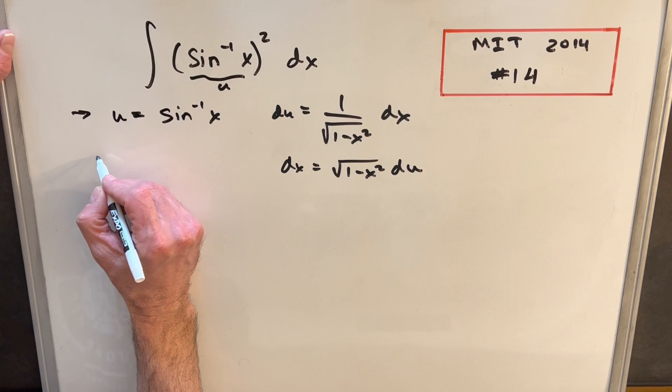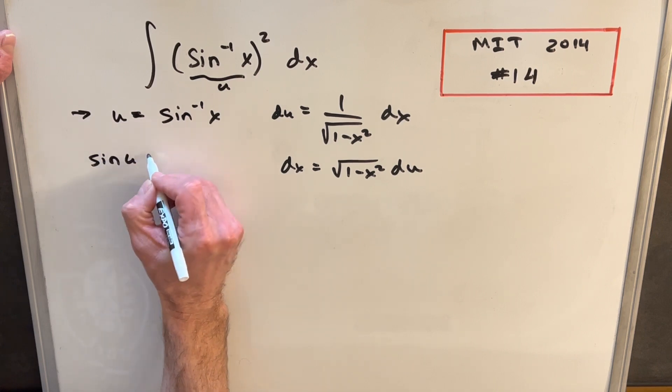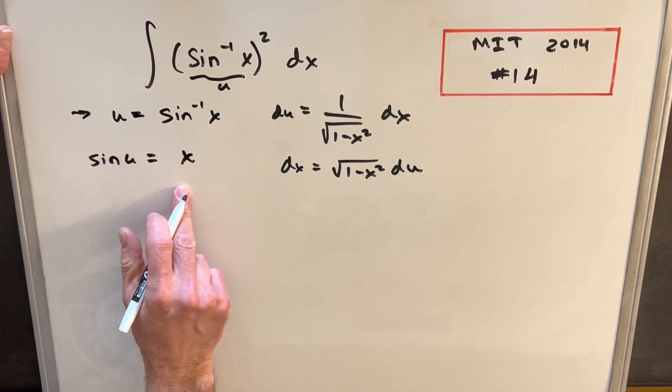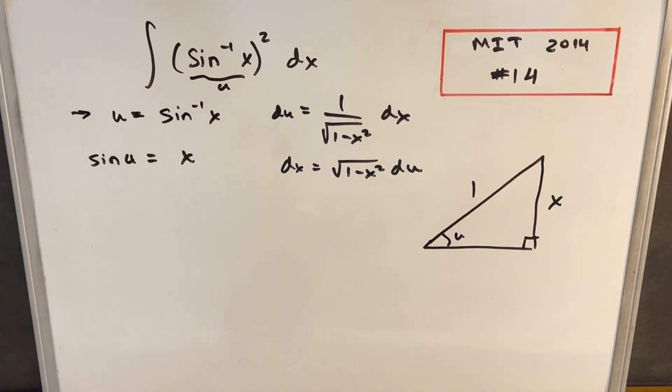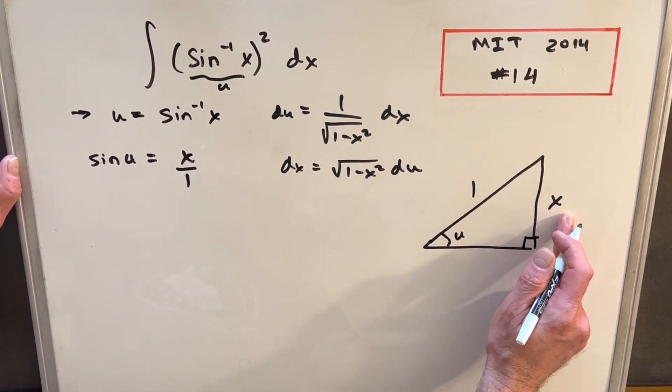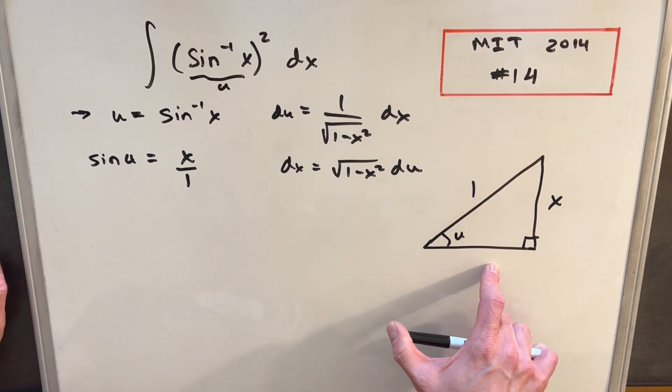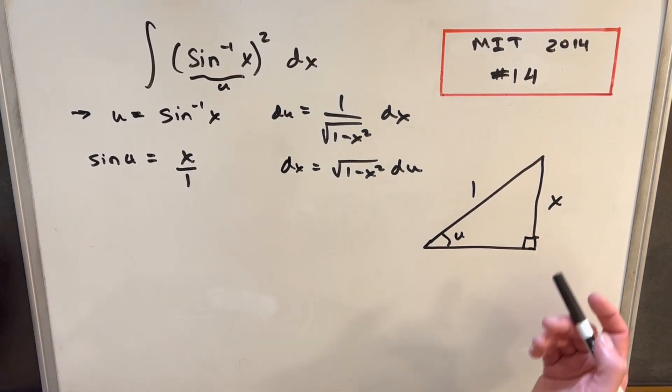I can write this as sine of u equals x, and then we can actually draw our triangle. We have our right triangle with the angle u. We know that sine u is opposite over hypotenuse, so we have a ratio of x to 1. We're using this triangle to look at the ratio of the sides.